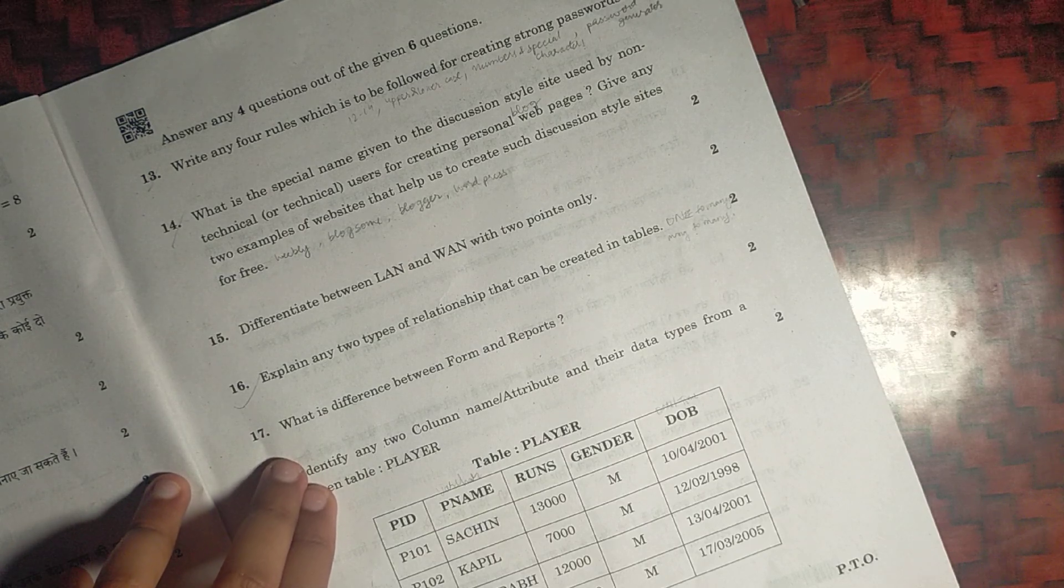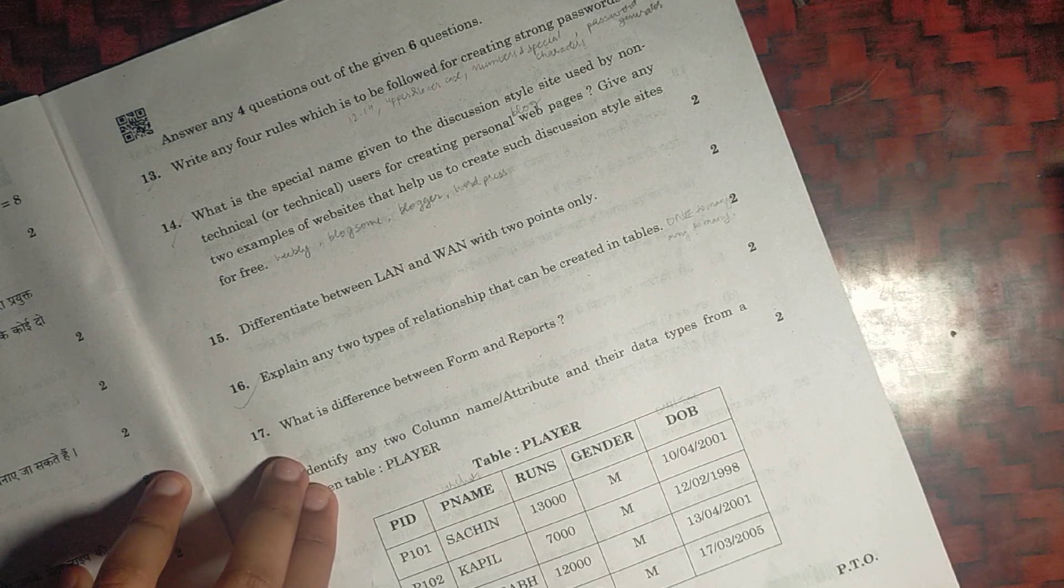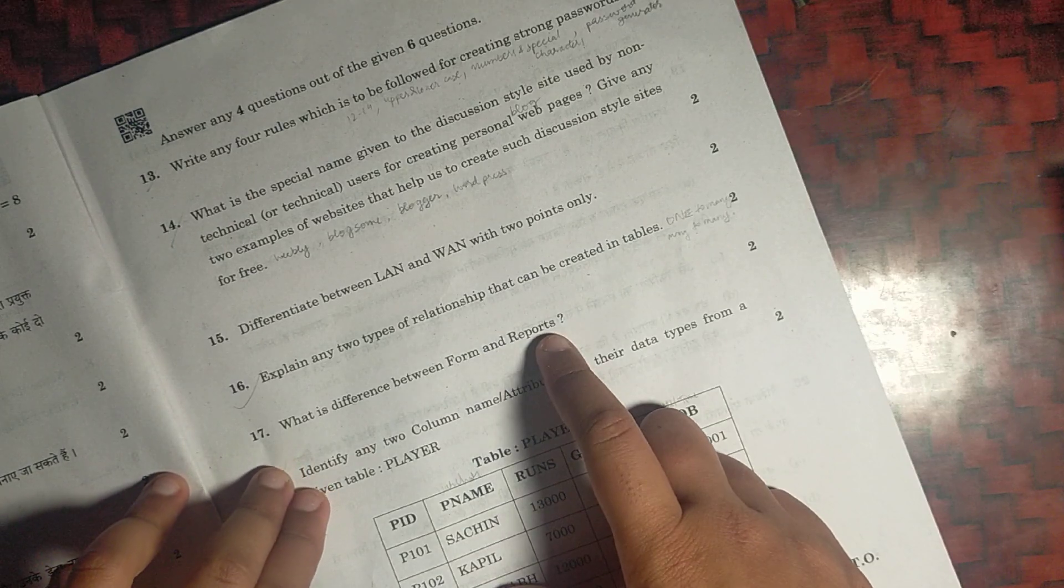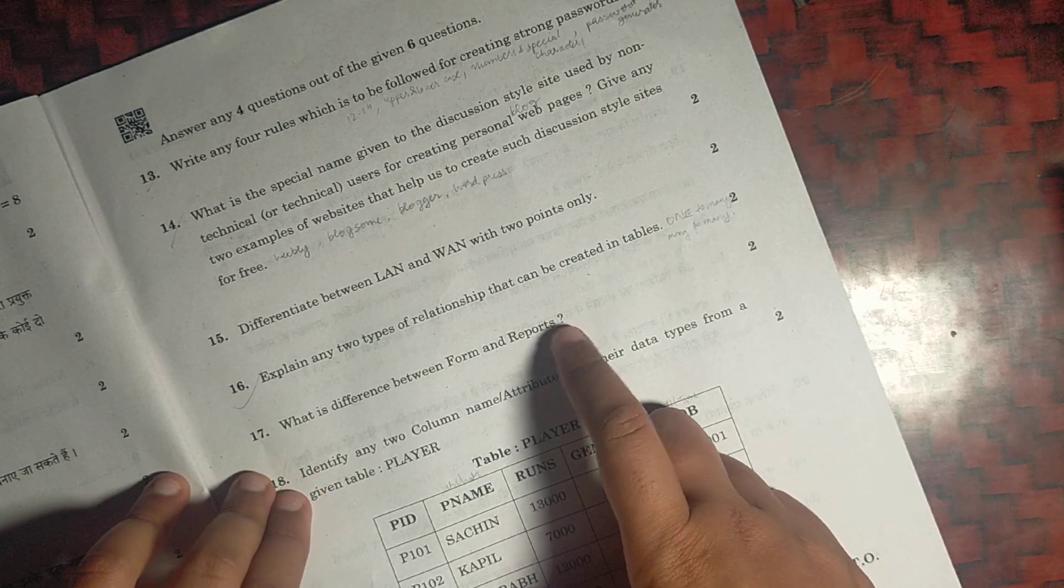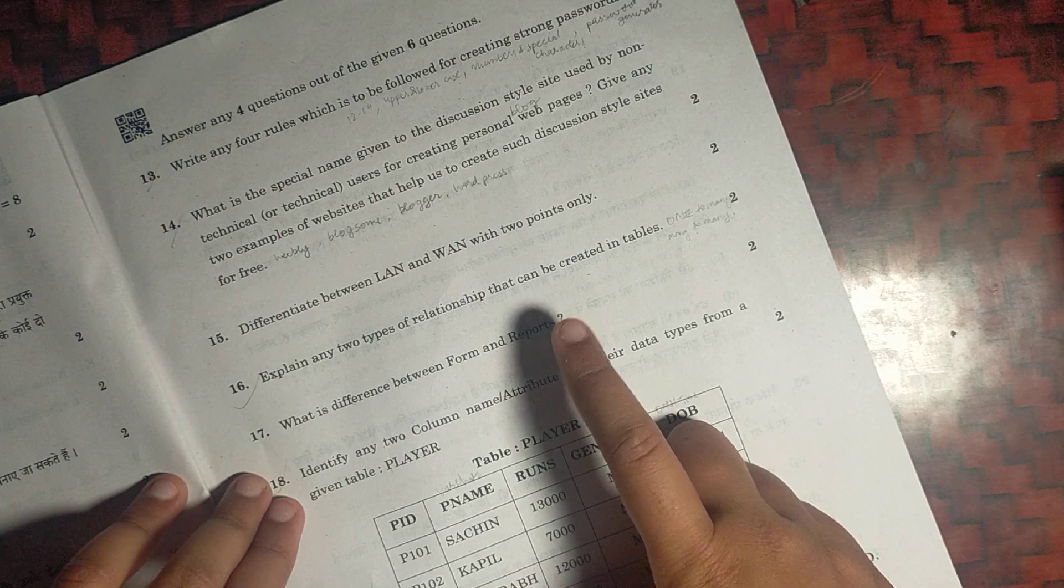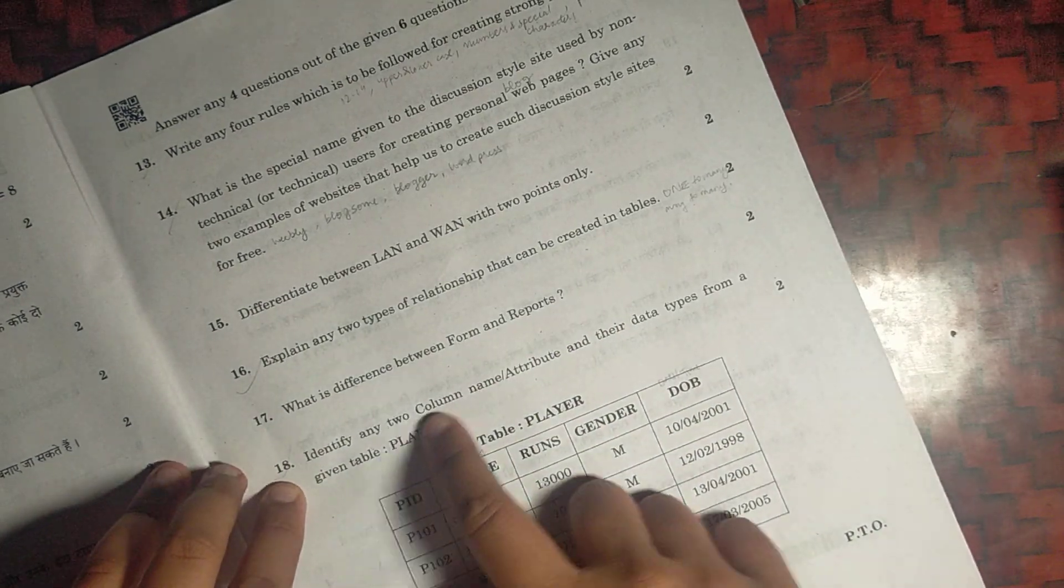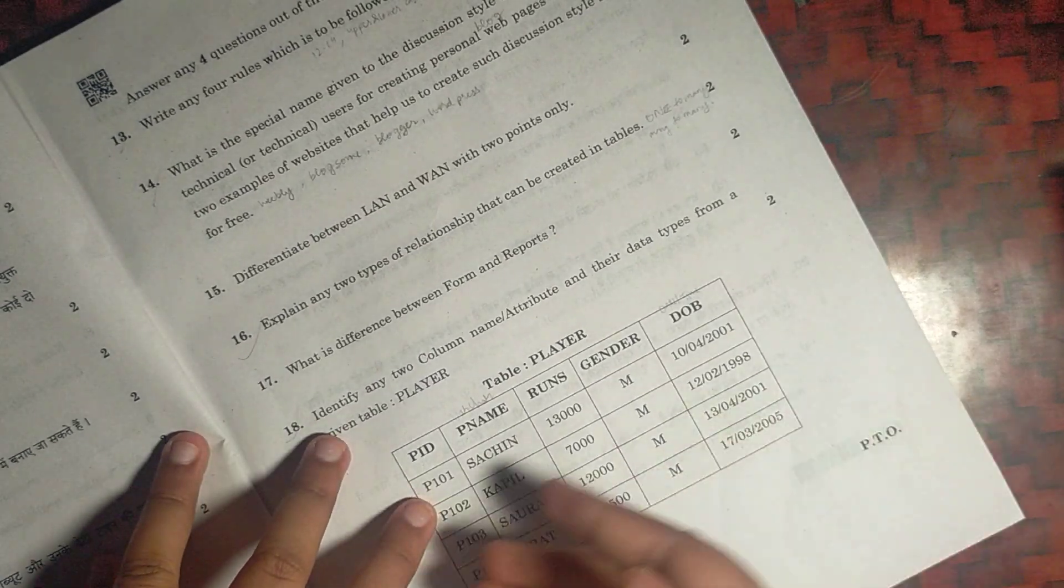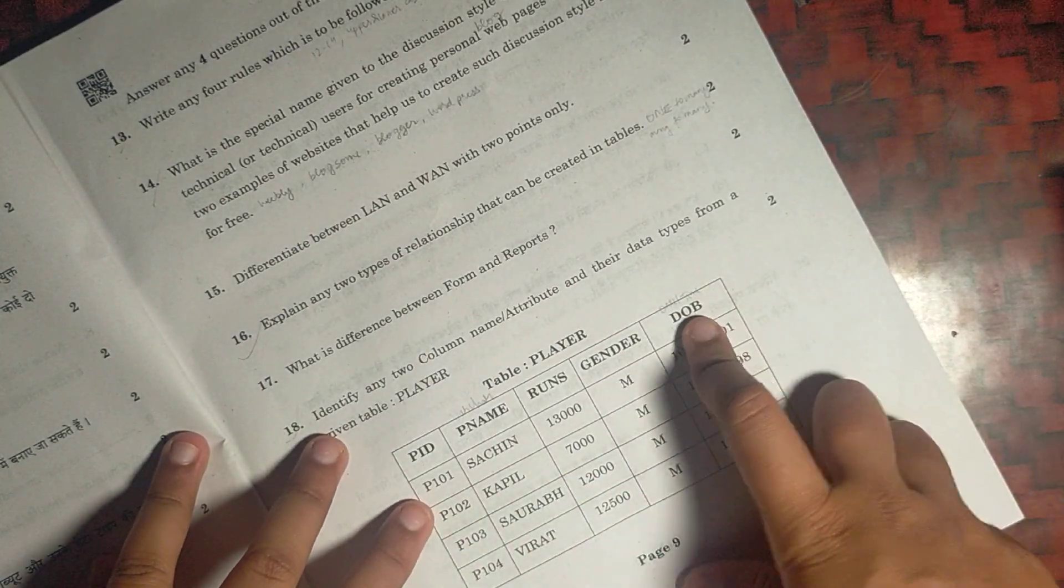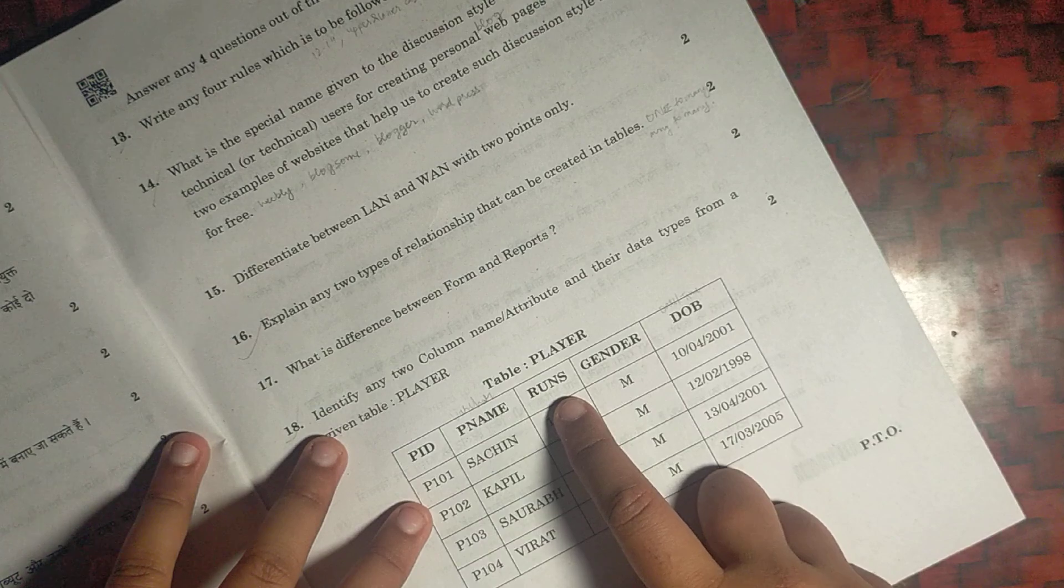Forms and reports. Forms provide us an interface to store information where reports present the total overall work outcome in a clear format in a summarized manner. So we can write this. Two columns of attributes, you can write any two of this, like DOB will be date time, this will be voucher, this will be integer.